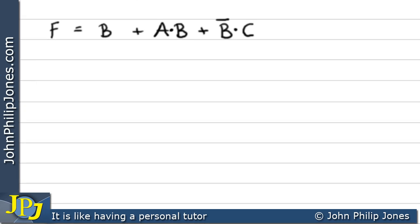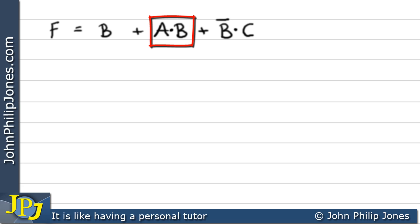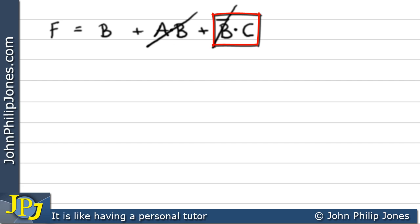For F equals B OR A AND B OR NOT B AND C: the variable B is by itself. Consequently, A AND B gets knocked out entirely because it contains B. In the term NOT B AND C, only NOT B gets knocked out, leaving C. So F minimizes to B OR C.